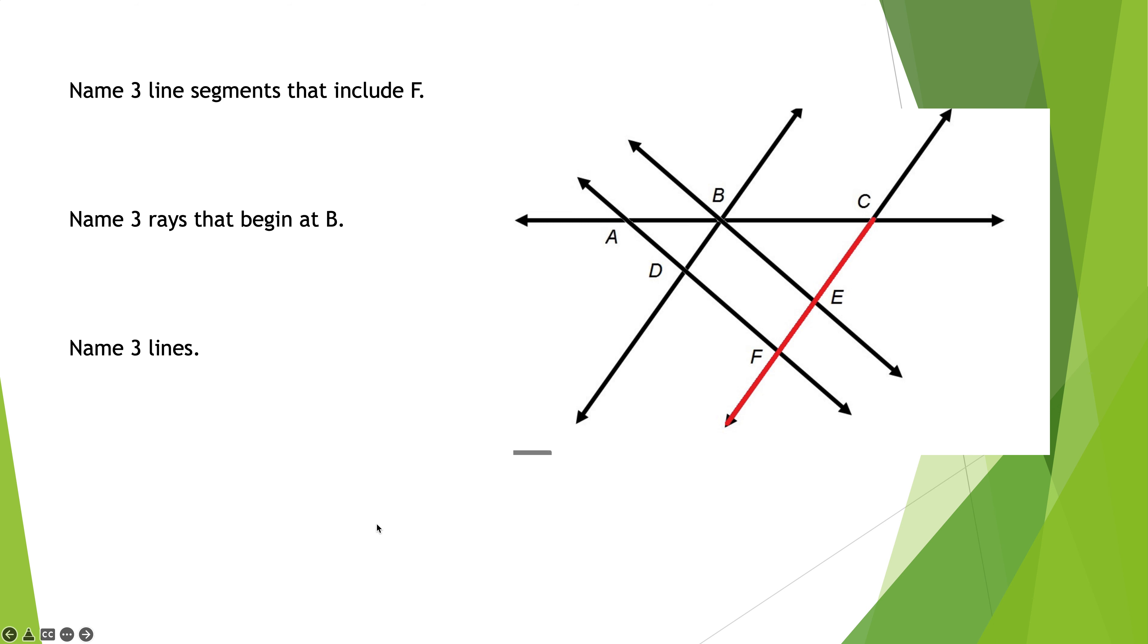Okay, so three segments that include F. I've got DF, right? And notice, very important, the segment notation on the top of D and F. The segment that goes from D to F, the segment that goes from F to E, and the segment that goes from F to C or C to F. Next, name three rays that begin at B. Well, I've got BE, I've got BD, I've got BD, and I've got BC. I could have also included BA on that as well.